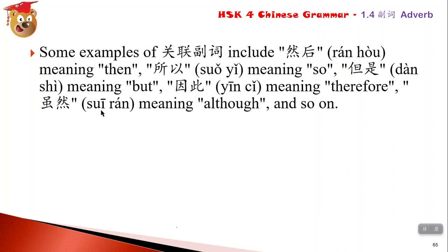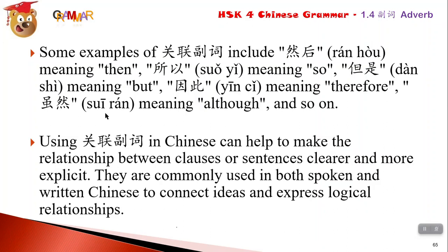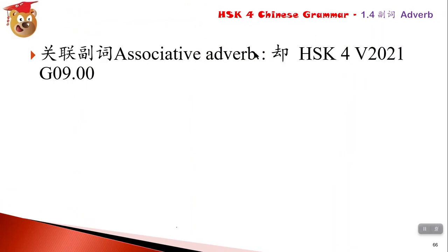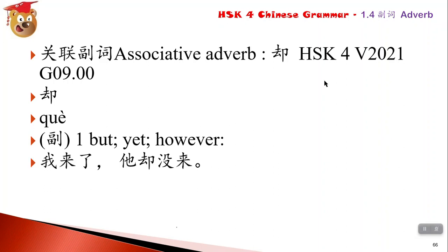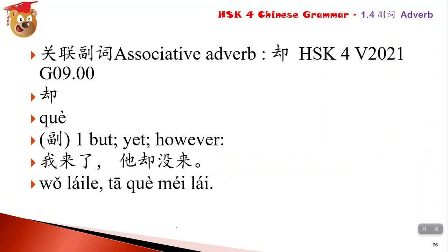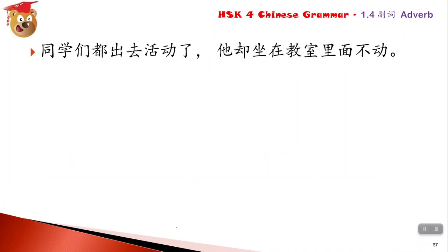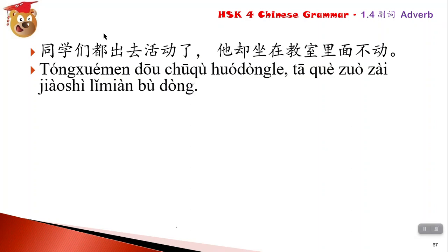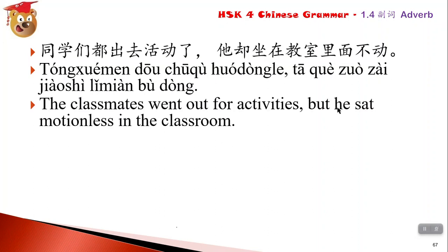却 means 'however' or 'but,' used to show contrast. For example: 我来了，她却没来 - I came, but she didn't. 同学们都出去活动了，她却坐在教室里面不动 - the students all went out for activities, but she sat motionless inside the classroom.